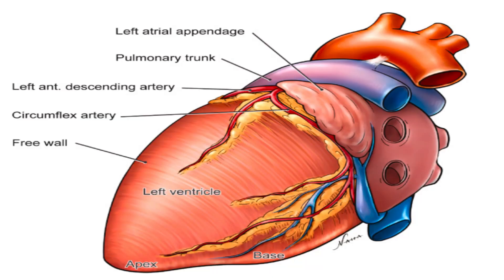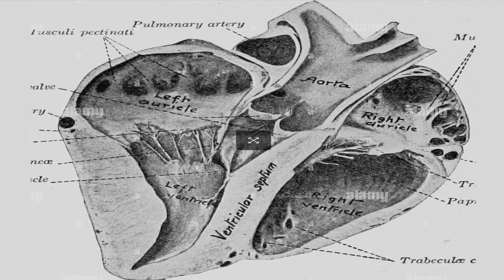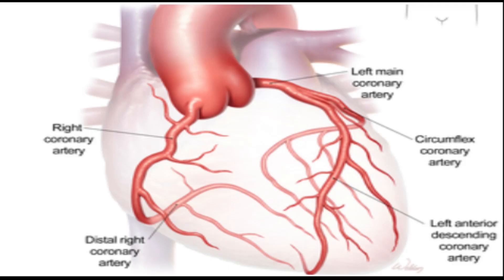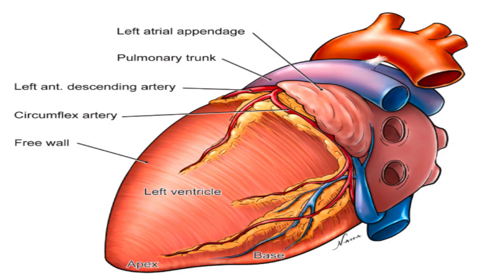Its branches supply blood to the other two thirds of your interventricular septum. Left anterior descending artery: the LAD supplies blood to the front and bottom of the left ventricle and the front of the septum.